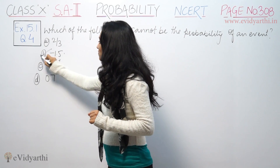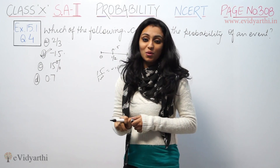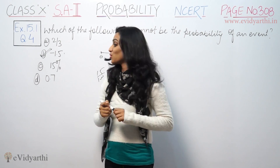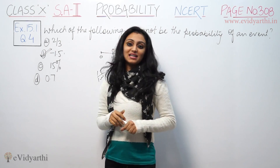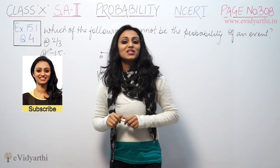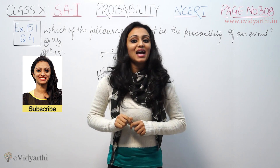So, negative numbers are not allowed in probability. The probability can never be negative. So, minus 1.5 is the right answer. This was the question from exercise 15.1.